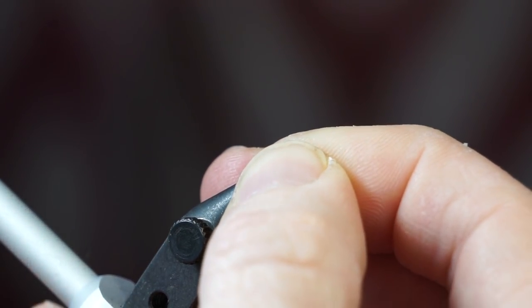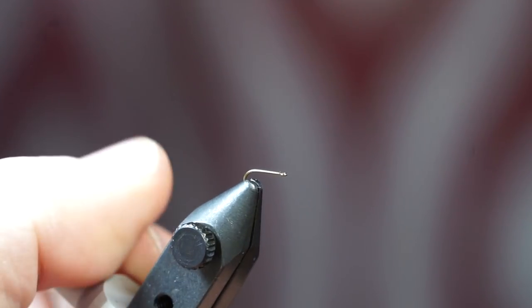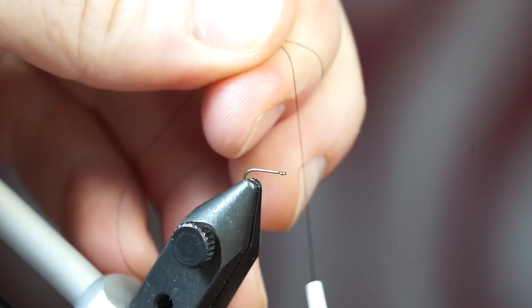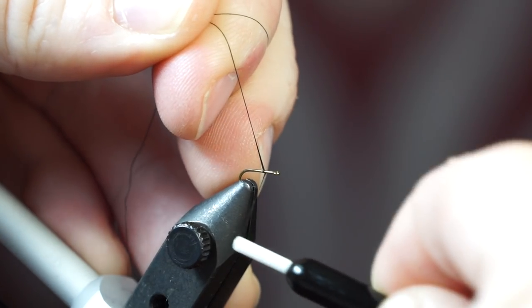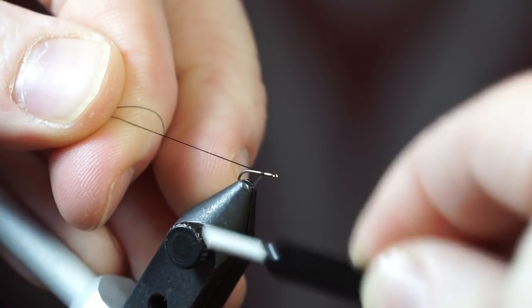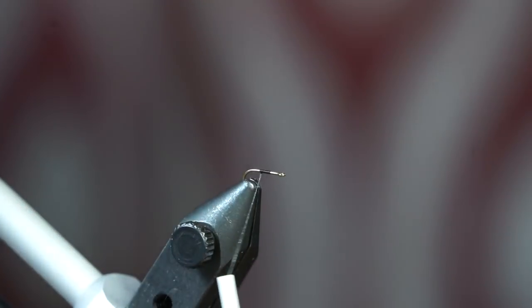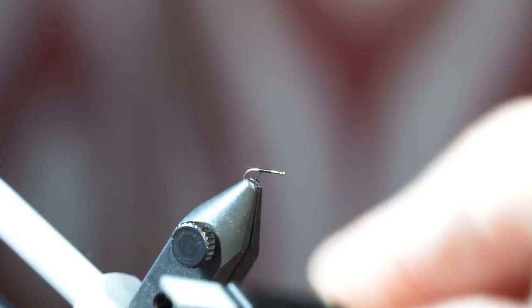The hook I am using is a TMC-101 in size 22 and the thread is Vivas 14-0 in black. Start your thread about a third of the way down the hook shank, then bring your thread down to the bend of the hook.